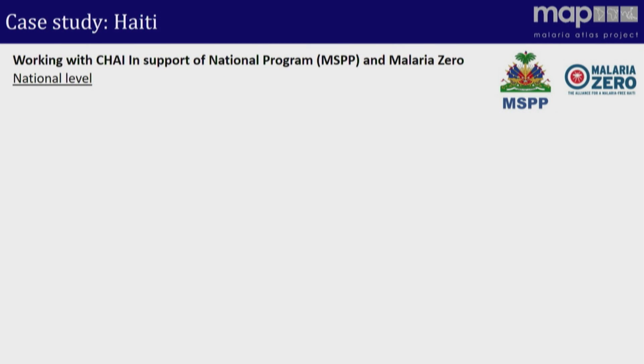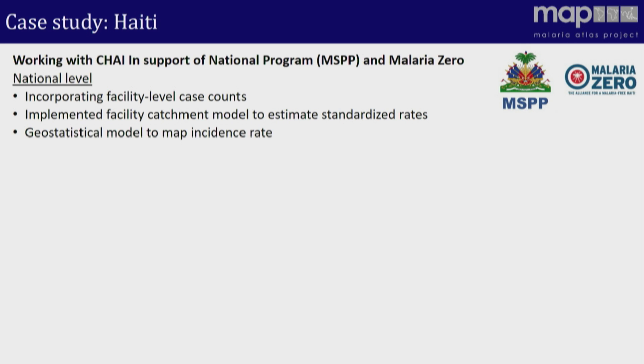Finally, I'm going to exemplify some of these tools in practice using the example of Haiti. Of those 16 countries, Haiti is probably the one we've been working in most intensely, with a lot of interesting work in terms of the diversity of data available. This is working very closely with CHAI to provide support to the national programme and the Malaria Zero Alliance. We're doing things in Haiti at two levels. Nationally, we've got data from individual health facilities on case counts, we're applying these catchment models, generating standardized rates, and doing our geostatistical mapping. I want to use this to demonstrate why a certain degree of sophistication is really important — you can get very wrong maps if your approach doesn't have the necessary nuance.